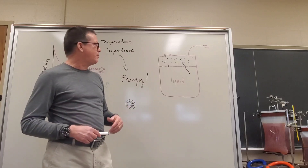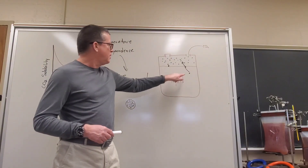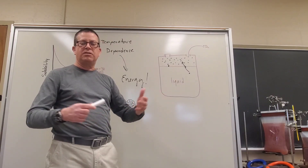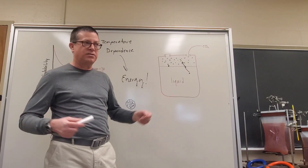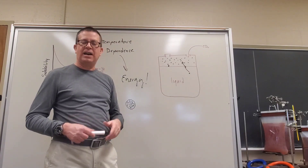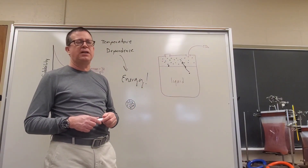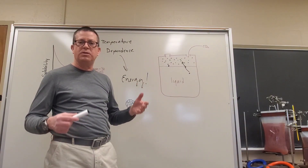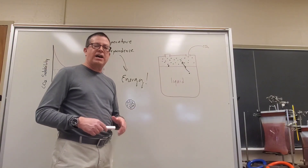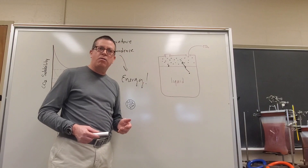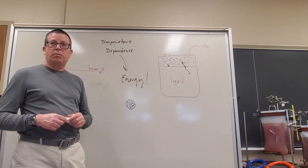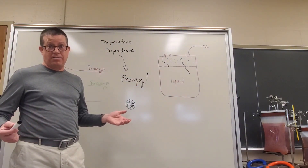Conversely, if we decrease the temperature, the solubilized CO2 molecules have less energy. There's less likelihood they'll reach the interface, and even if they do reach it, they'll have less energy to escape from the liquid phase back into the vapor phase. That's a simple model to explain why a gas will be more soluble at a lower temperature than a higher temperature.